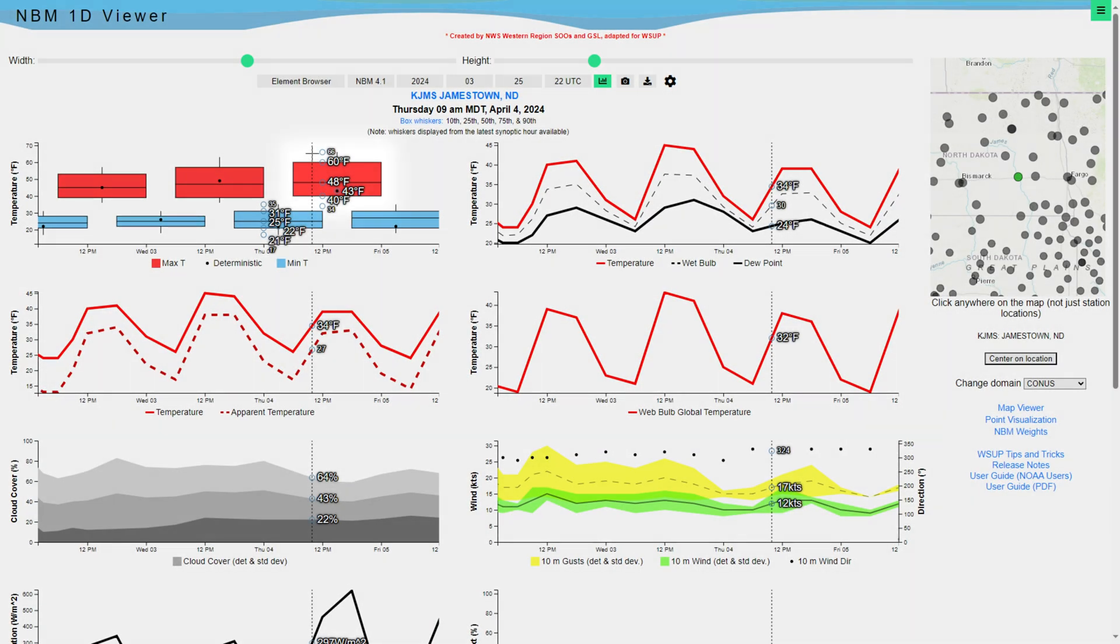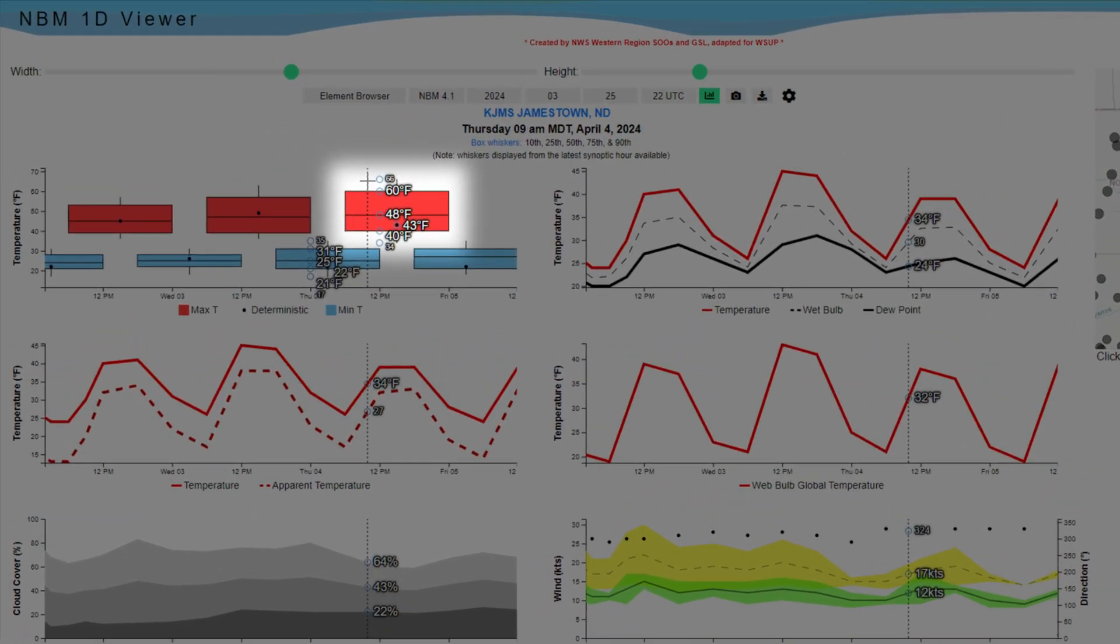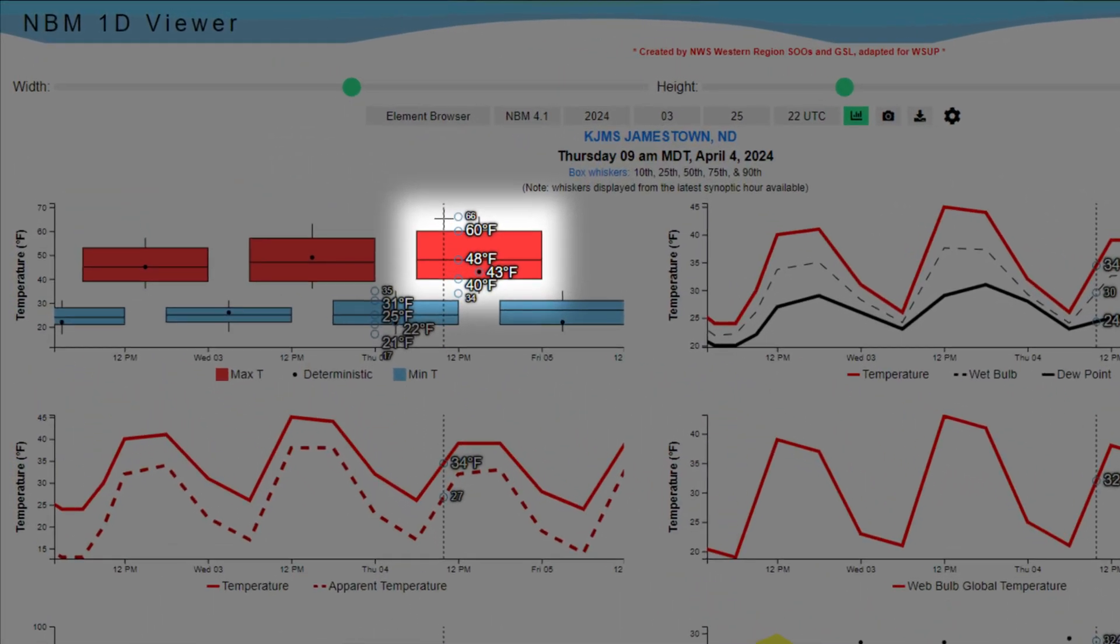Zooming into the forecast time frame in the temperature plot, we can quickly see that the values for Thursday indeed range from 34 to 66 degrees on the box and whisker plot, confirming that there is a large range in values corresponding to this forecast period.